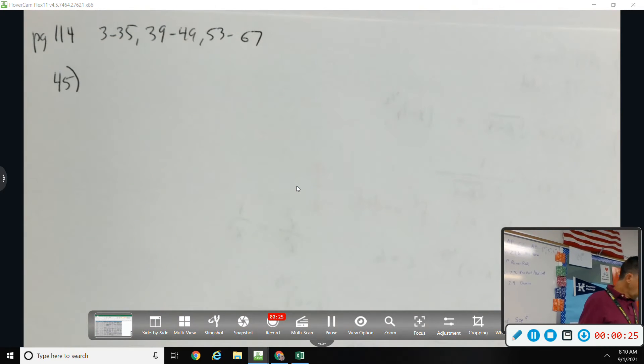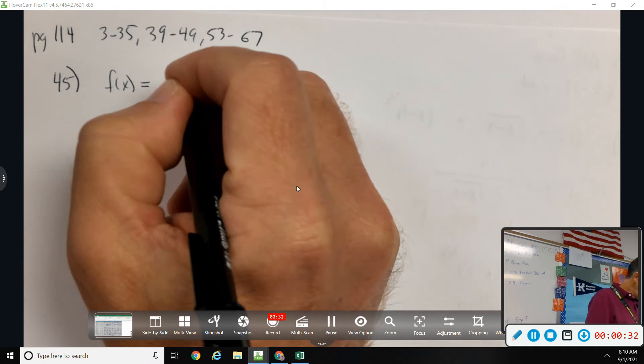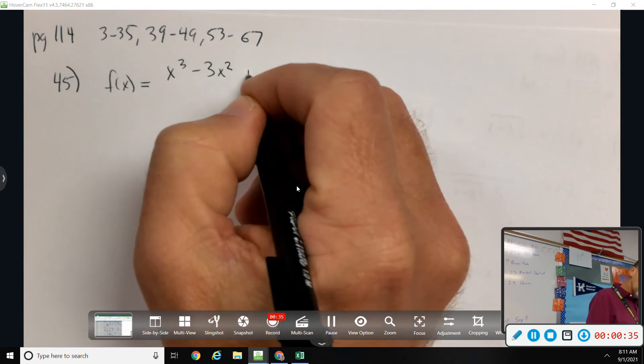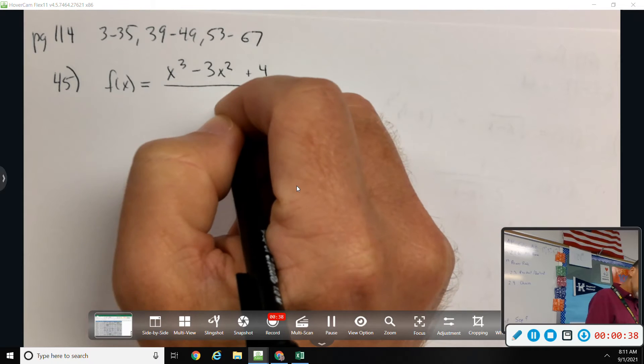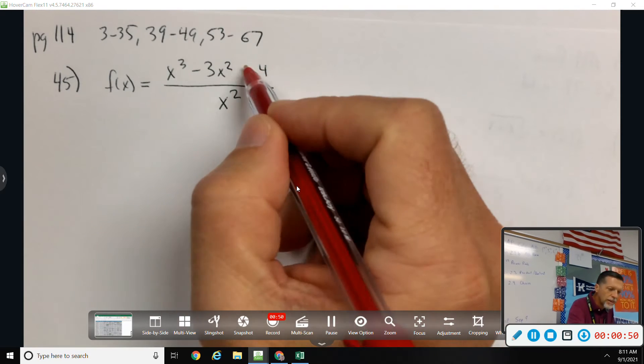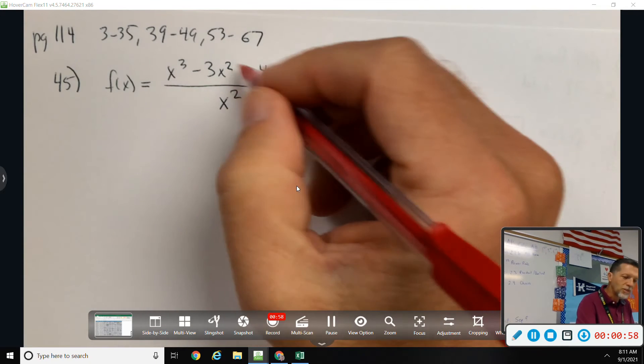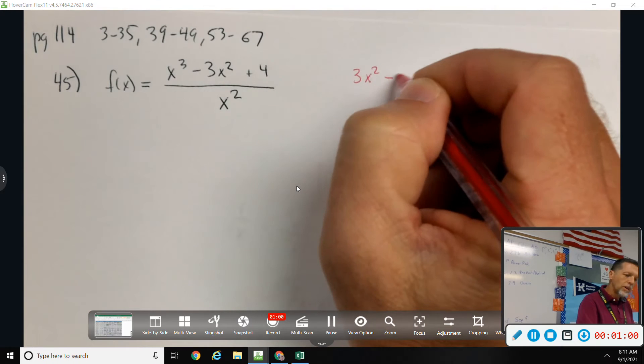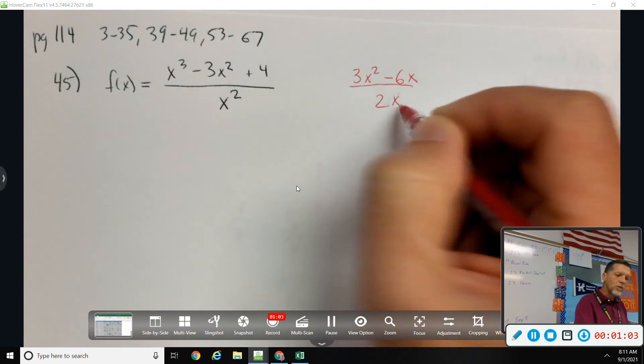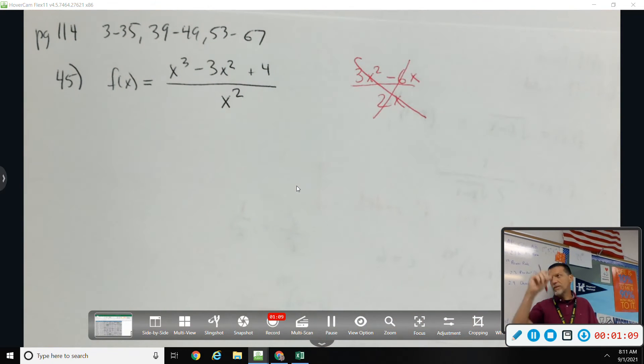Oh, this would be the same. So 45, f(x) equals x cubed minus 3x squared plus 4 over x squared. Find the derivative. Okay. What you absolutely cannot do and what we will address today is you can't take the derivative of the top and the derivative of the bottom and then put them back together. That would be awesome if it worked because that would be so easy. The top would be 3x squared minus 6x and the bottom would be 2x and you'd be done. But it doesn't work that way.